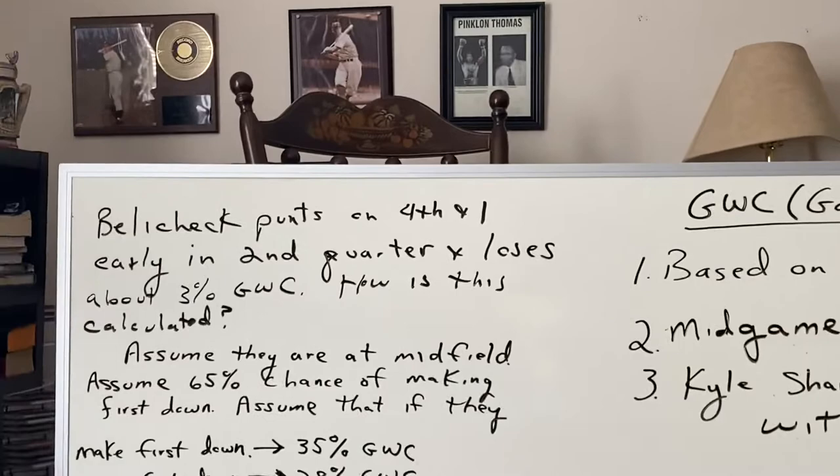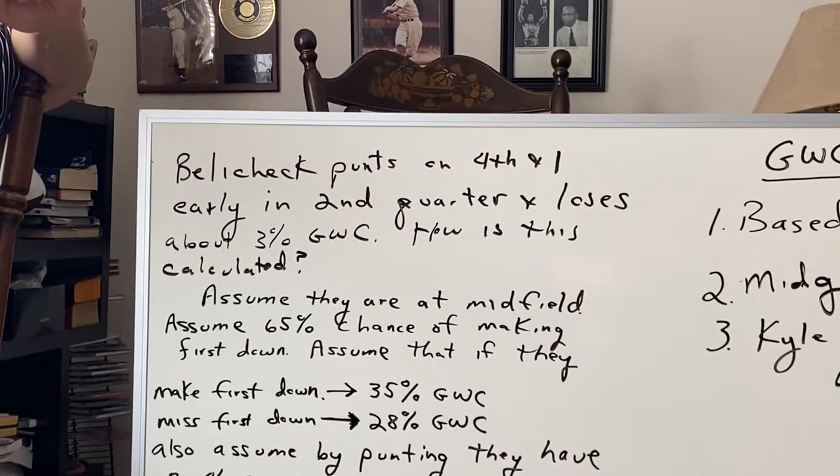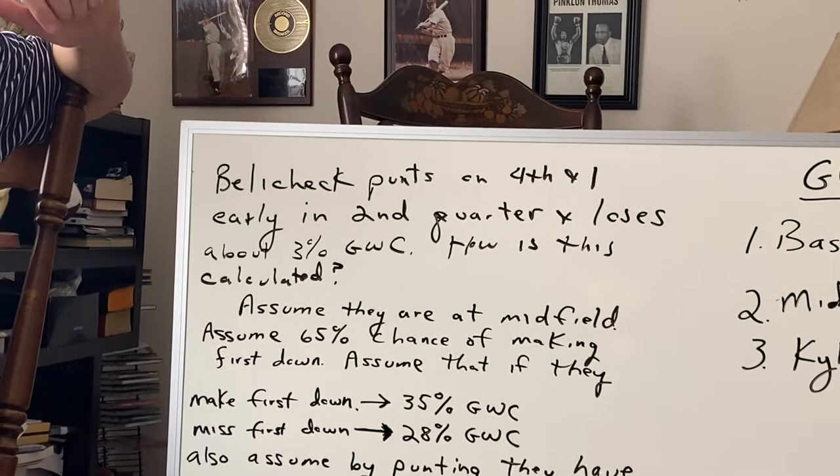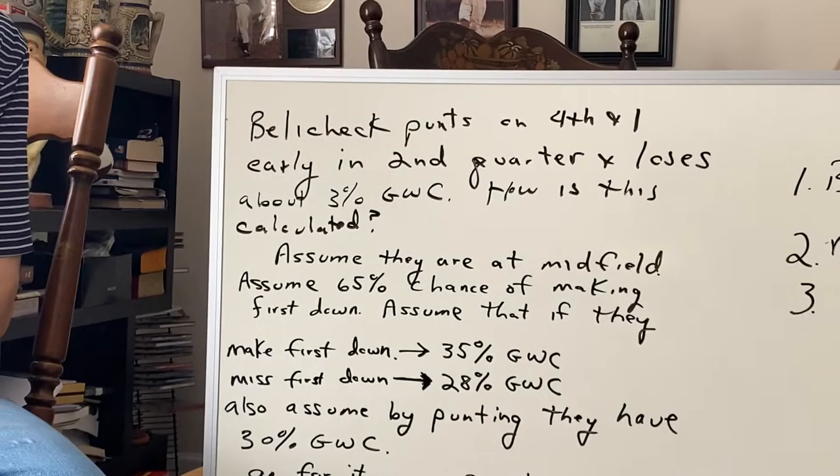A mid-game example. One that stood out was Bill Belichick going forward on 4th and 1 early in the game against the Bills just this previous weekend. He was down 14-0, and he lost about 3% game-winning chances. How do we calculate that? Well, we compare two scenarios — whether or not he punts compared to whether or not he goes for it.